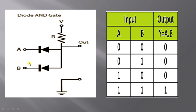If high voltage is given to the negative terminal, that is reverse bias. So these two diodes are in reverse bias and they do not conduct current. Current does not pass through the circuit, so all the voltage will appear at the output. Output voltage will be high, so output is 1.